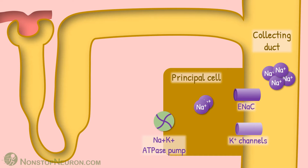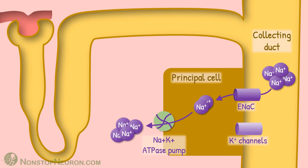Sodium concentration inside the cell is lower than that in the lumen. This gradient drives the diffusion of sodium into the cell through epithelial sodium channels. From the cell, this sodium is actively pumped out into the interstitium by the sodium-potassium ATPase pump. This extrusion maintains low intracellular sodium concentration for continuous sodium entry at the apical membrane. Entry of positively charged sodium into the cell makes the lumen electronegative.